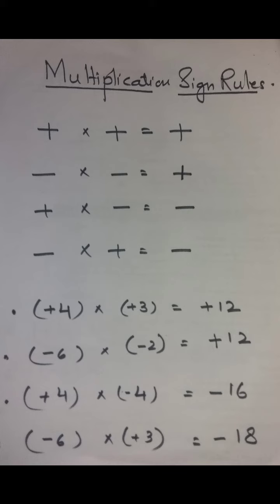Now the multiplication sign rules. Plus multiply by plus, answer is in plus sign. Minus multiply by minus, answer is in plus sign. Plus multiply by minus, answer is in minus sign. Minus multiply by plus, answer is in minus sign.